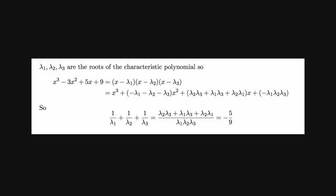So now that we have the characteristic polynomial written with coefficients in terms of the eigenvalues, we can compare coefficients to get exactly the numerator and denominator for the simplified expression of the sum of the reciprocals that we want.